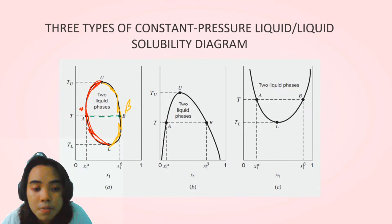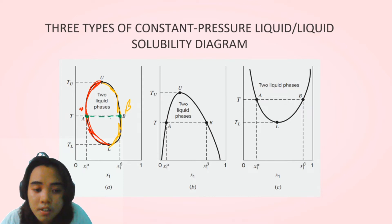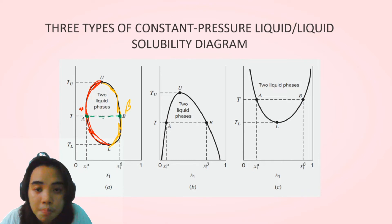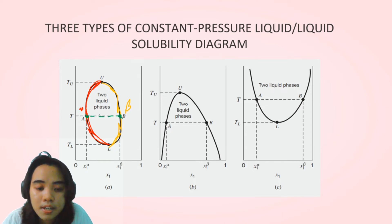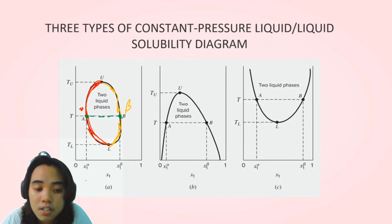Points A and B are the inflection points where the curvature starts to change its sign. At each temperature, these compositions are those for which the curvature of delta G versus composition also changes sign. We know that at equilibrium delta G is zero, and at these inflection points, delta G versus x₁ also changes sign.